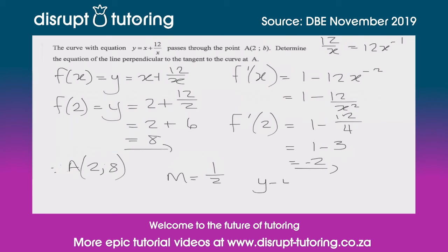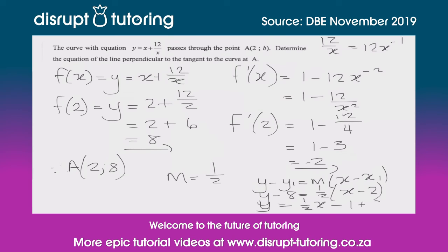We'll use the formula y minus y1 equals m times (x minus x1). Substituting point A=(2, 8) and gradient m = 1/2: y minus 8 equals 1/2 times (x minus 2). Expanding: y = (1/2)x minus 1 plus 8, so y = (1/2)x + 7. That is the equation of the line passing through point A and perpendicular to the tangent to the curve at that point.